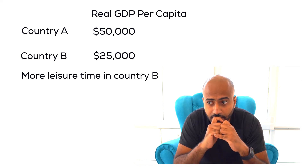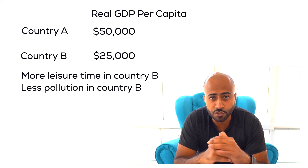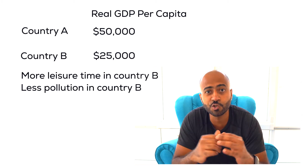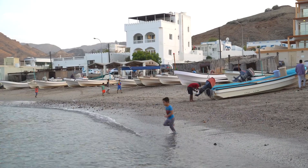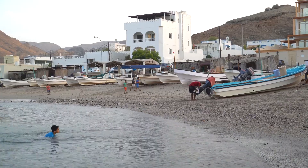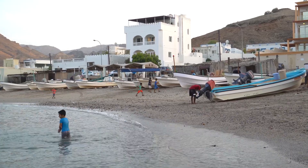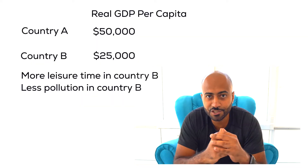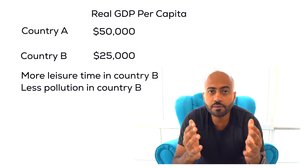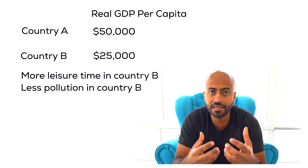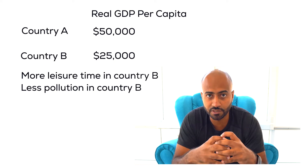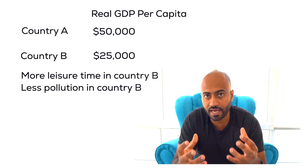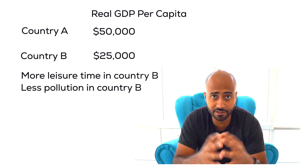In Country A there's so much pollution that you can't leave the house, whereas in Country B it's fresh air and everyone is enjoying it. The problem with real GDP is it doesn't take environmental issues into consideration. So when we're comparing across geographies, we cannot capture that difference.